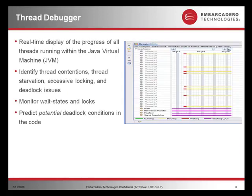The thread debugger allows for the real-time display of progress of all threads running within the Java virtual machine, allowing you to identify thread contentions, thread starvation, excessive locking, and deadlocking issues. The nice thing about this feature is it allows you to predict potential deadlock conditions in the code.